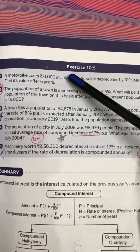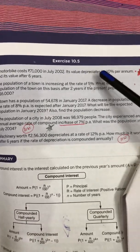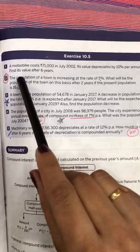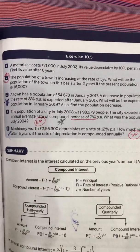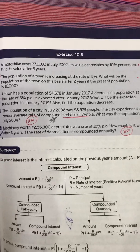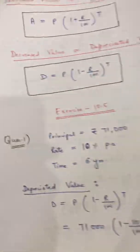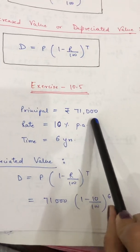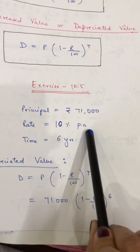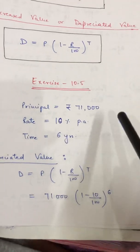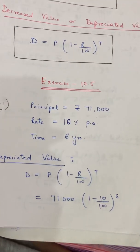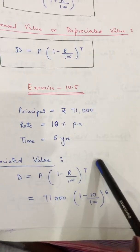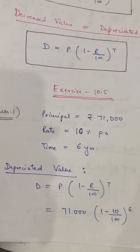First question: A motorbike costs ₹71,000 in July 2002. Its value depreciates at 10% per annum. Find its value after six years. Principal = ₹71,000, Rate = 10% per annum, Time = 6 years. Everything is given annually, so no need to change the rate or time.